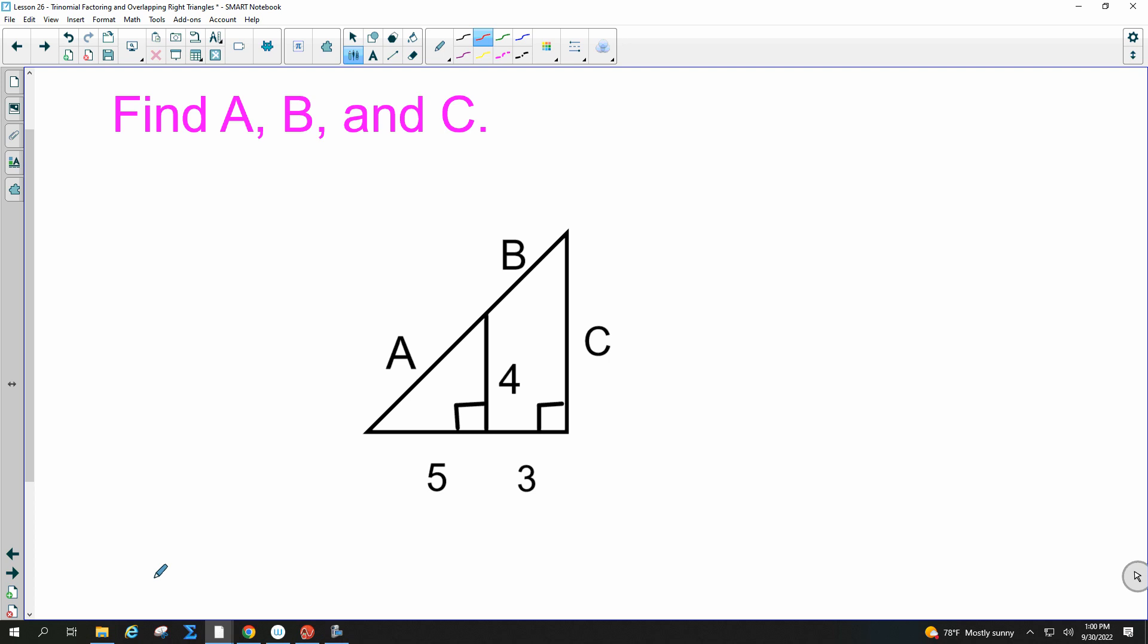So if I wanted to find A first, since it's a right triangle, what can we do? Pythagorean theorem. So I would do 5 squared plus 4 squared equals A squared. Again, this is the hypotenuse, so it has to be on this side of the equation when you're doing Pythagorean theorem. So that would be 25 plus 16 equals A squared. When you add those, you get 41. And then you would square root both sides. So I know that this side right here is the square root of 41.